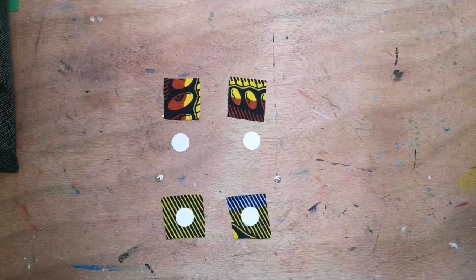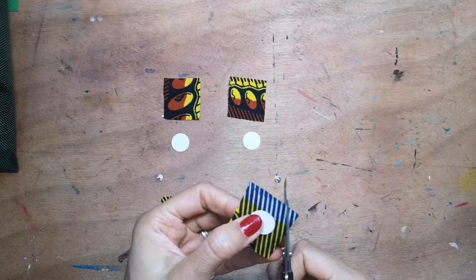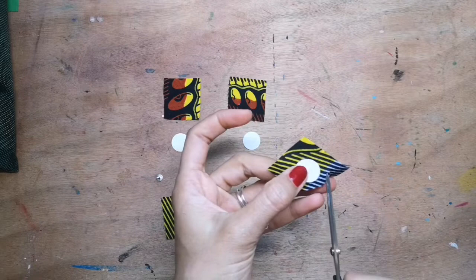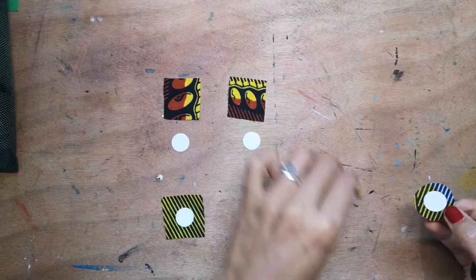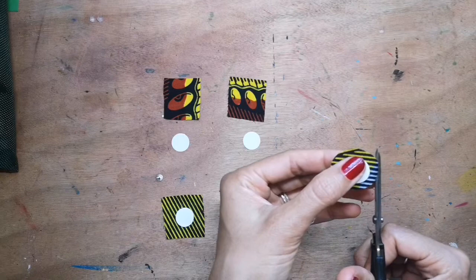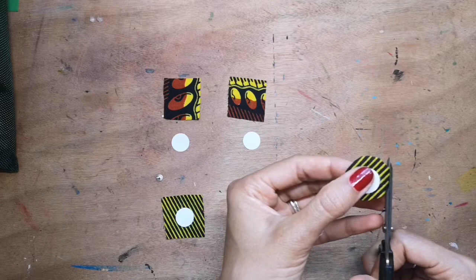The second step is to take your sharp scissors and just cut a little way around. Can you see I'm leaving a gap there? I'm going to cut around the disc so that I don't have lots of excess fabric getting in my way. You want it about maybe two to three millimeters around the disc.